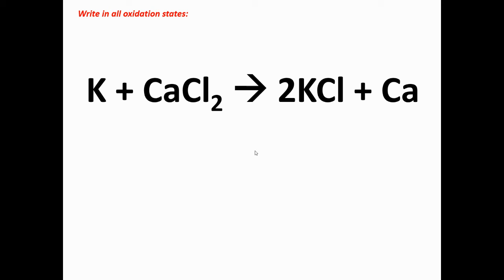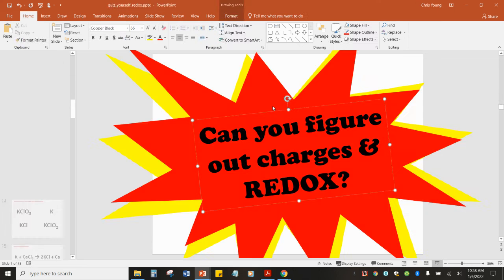For the last set: potassium by itself is a free element — charge is zero. Calcium by itself is also zero. In CaCl₂, calcium is plus two so each chlorine must be minus one. In 2KCl, you can ignore the coefficient in front — it just means there are two of the whole compound. In KCl, potassium is plus one and chlorine is minus one. We've figured out all the charges — thanks for watching!